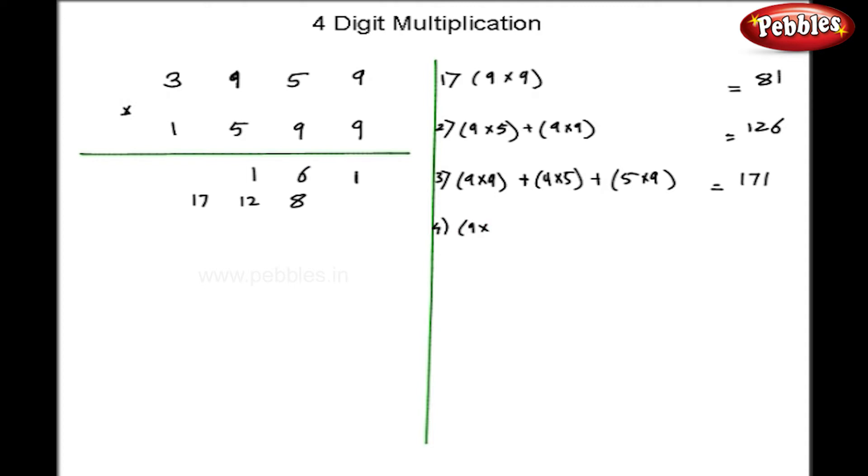At the fourth step, I will do 9 into 3 plus 9 into 1 plus 9 into 9 plus 5 into 5. So, my answer is 142. So, 14 is a carry over and 2 on the first row.